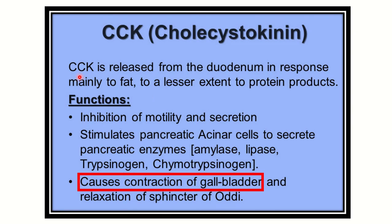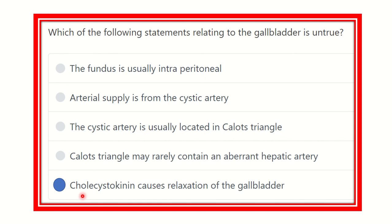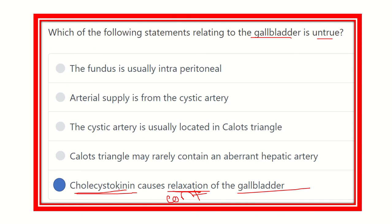CCK, that is cholecystokinin, is released from the duodenal mucosa. One of its functions is to cause contraction of the gallbladder, which helps release bile from the gallbladder. So our answer is that the statement 'cholecystokinin causes relaxation of the gallbladder' is not true, because we saw that cholecystokinin is a hormone that causes contraction of the gallbladder. The other options — fundus is usually intraperitoneal, arterial supply from the cystic artery, cystic artery located in Calot's triangle, and Calot's triangle may rarely contain an aberrant hepatic artery — are all true.